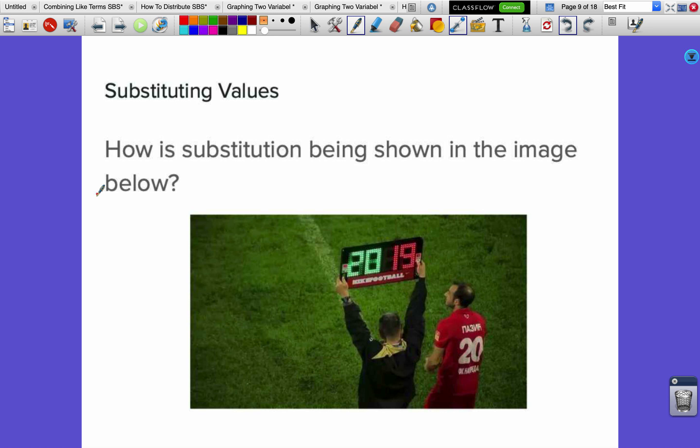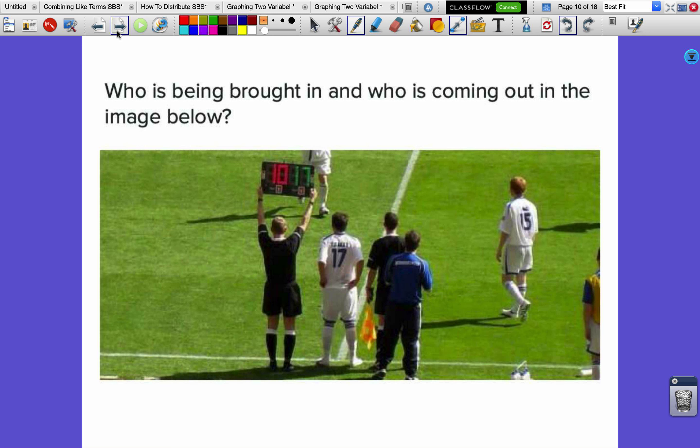How is substitution being shown in the image below? Maybe soccer is a sport we're familiar with. We have this guy, number 20, going out of the field, and number 19 is coming on - that's what that sign means.